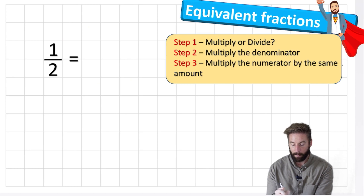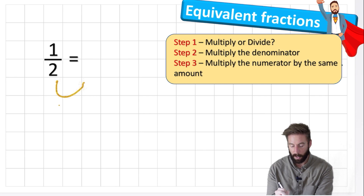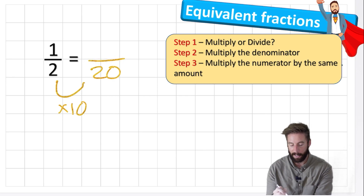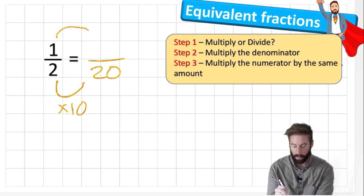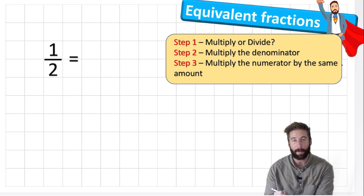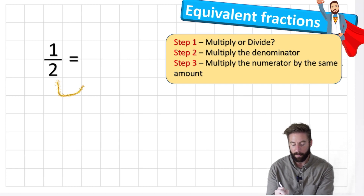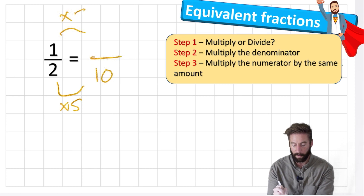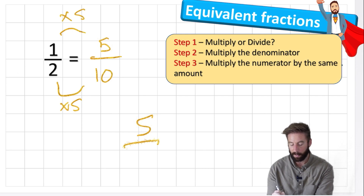Let's do another one — let's times it by ten. Two times ten is twenty, and then whatever I've done to the denominator I need to do to the numerator, so one times ten is ten. Therefore ten twentieths is an equivalent fraction to one half. I could do this forever — there's an unlimited number of equivalent fractions depending on the numbers you multiply by. Let's multiply by five: two times five is ten, and one times five is five, so five tenths is an equivalent fraction.